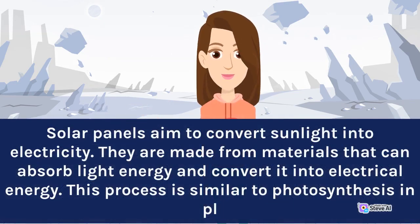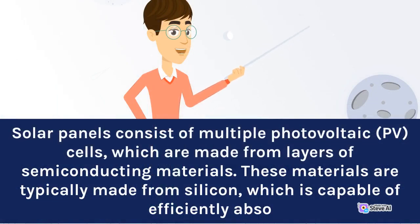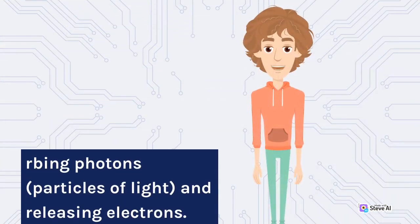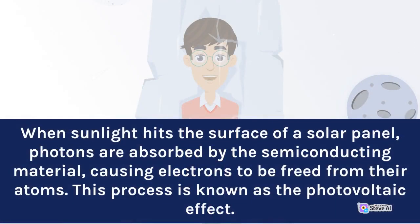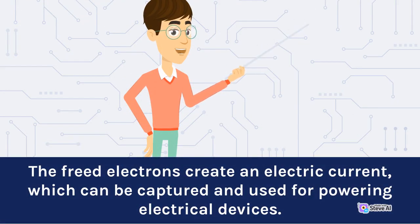Solar panels aim to convert sunlight into electricity. They are made from materials that can absorb light energy and convert it into electrical energy. This process is similar to photosynthesis in plants, where light energy is converted into chemical energy in the form of glucose. Solar panels consist of multiple photovoltaic (PV) cells, which are made from layers of semiconducting materials, typically silicon, which is capable of efficiently absorbing photons, particles of light, and releasing electrons. When sunlight hits the surface of a solar panel, photons are absorbed by the semiconducting material, causing electrons to be freed from their atoms. This process is known as the photovoltaic effect. The freed electrons create an electric current, which can be captured and used for powering electrical devices.